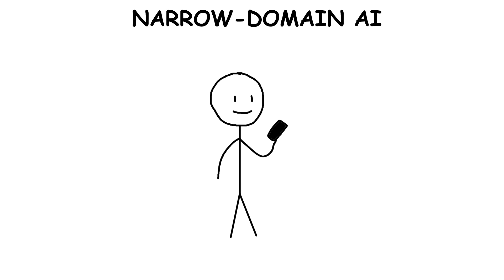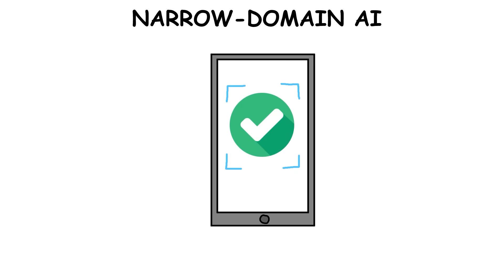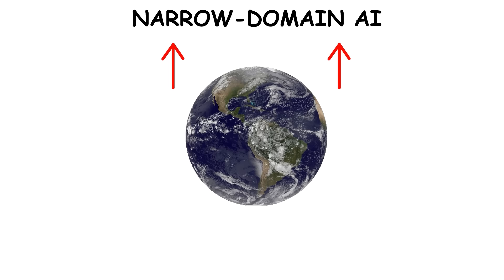We also use narrow AI in everyday things like spam filters in email and facial recognition on smartphones. As of now, the best AIs in the world are at this level.